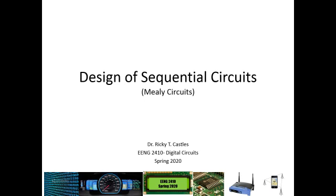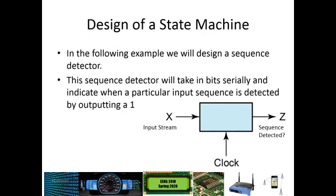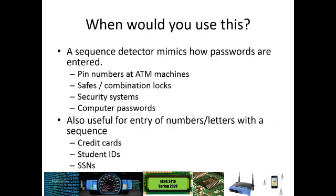In this video, I want to continue where we left off last time, where we were discussing the design of a sequence detector, and particularly a Mealy circuit for the detection of a sequence. A sequence detector takes in a sequence of bits, one bit at a time, clocked through, and then it looks for a particular pattern, and will output a 1 on output Z when that pattern is found, and a 0 when that pattern is not found.